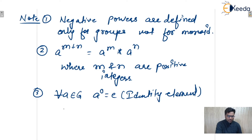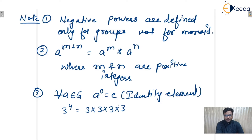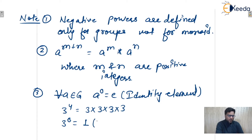In normal mathematics, 3 raised to power 4 means 3 into 3 into 3 into 3 — multiplying 3 four times. And 3 raised to power 0 is 1, because in normal mathematics power means multiplication, and the identity element for multiplication is 1. That is why any element raised to power 0 gives the identity element.